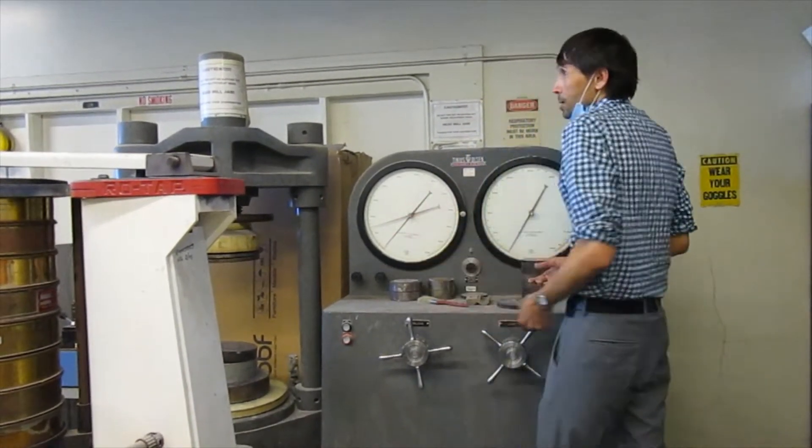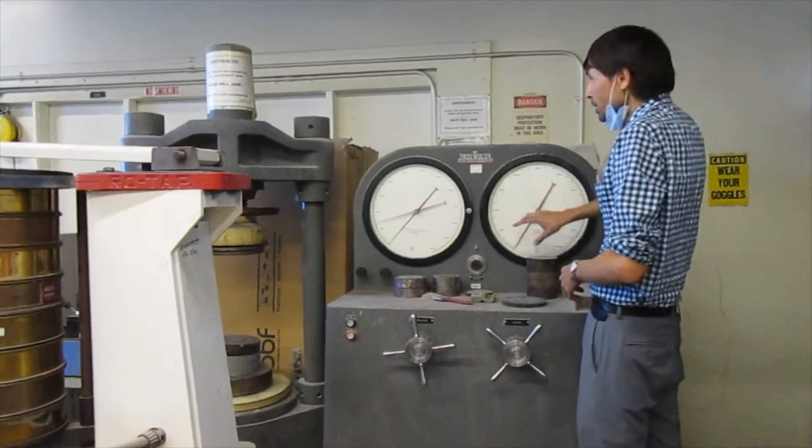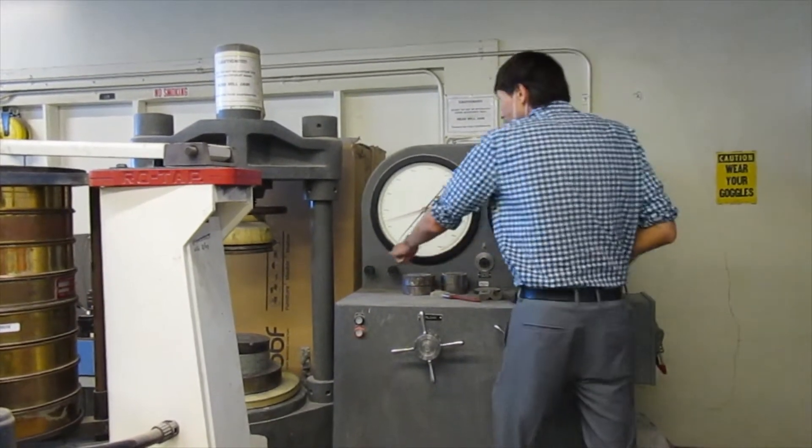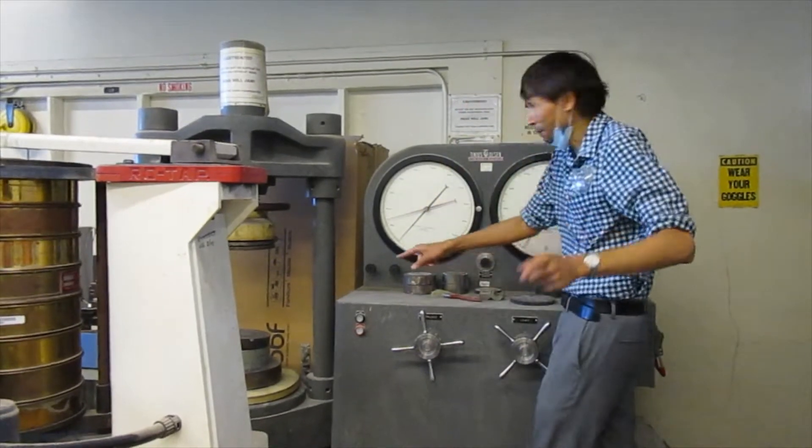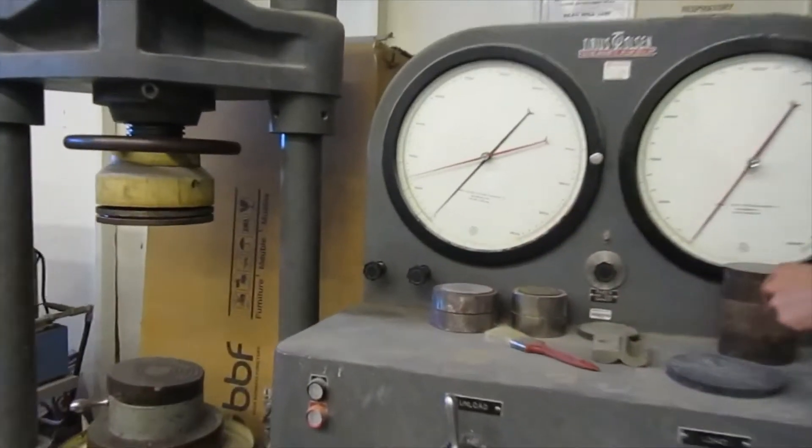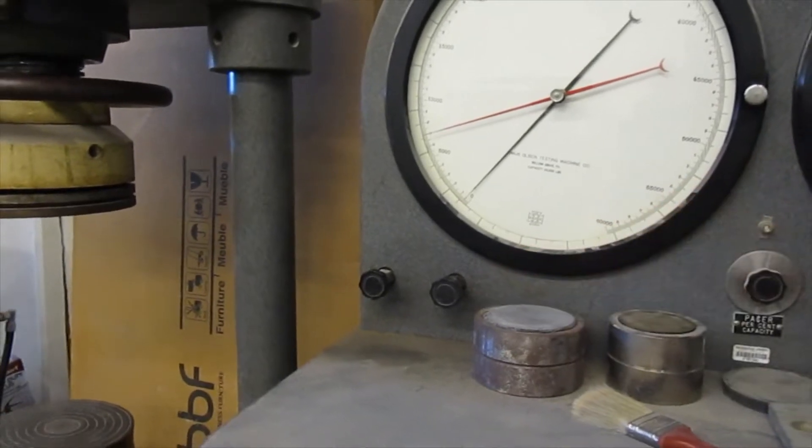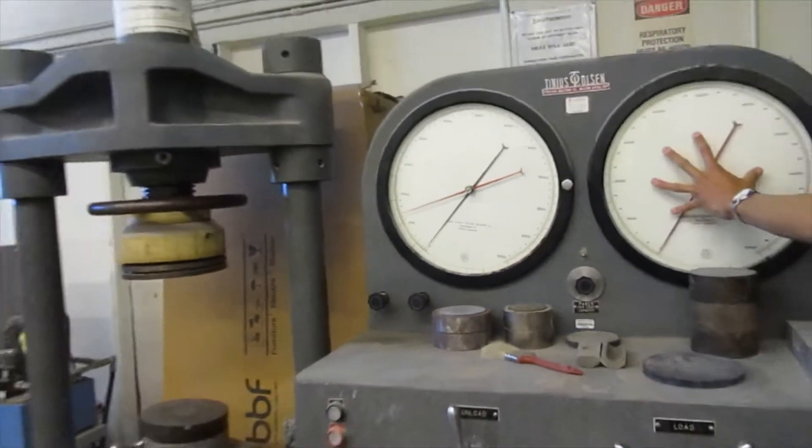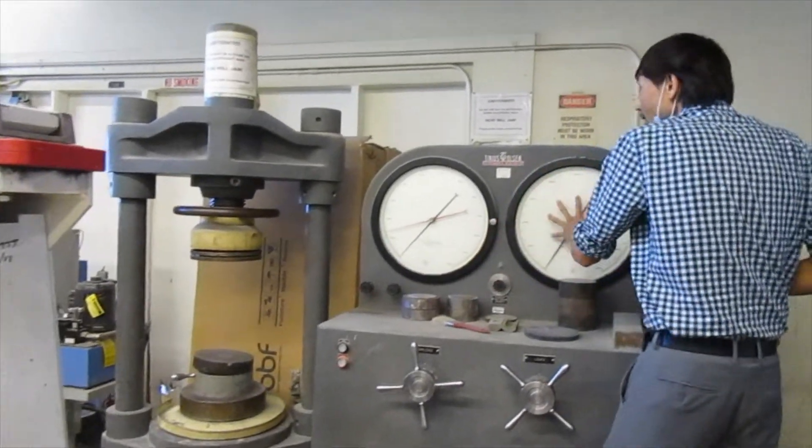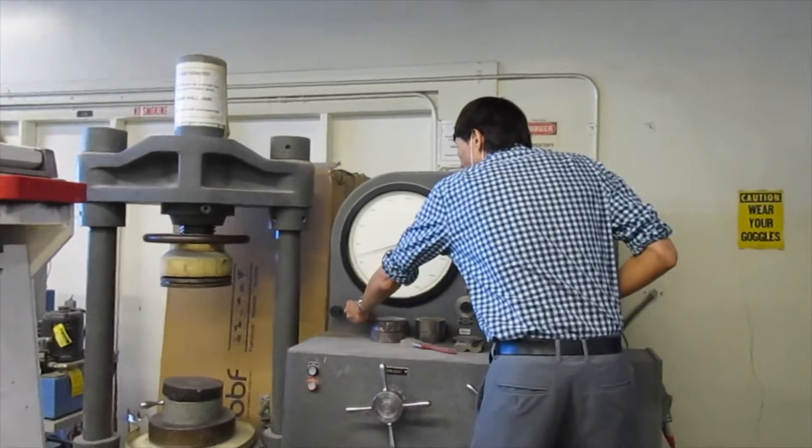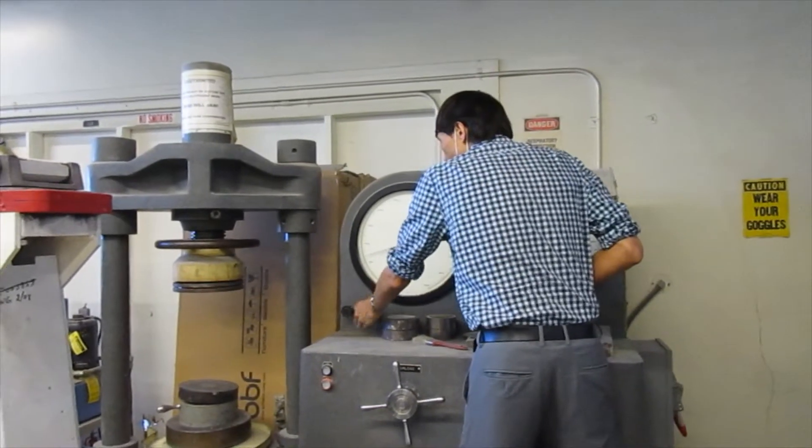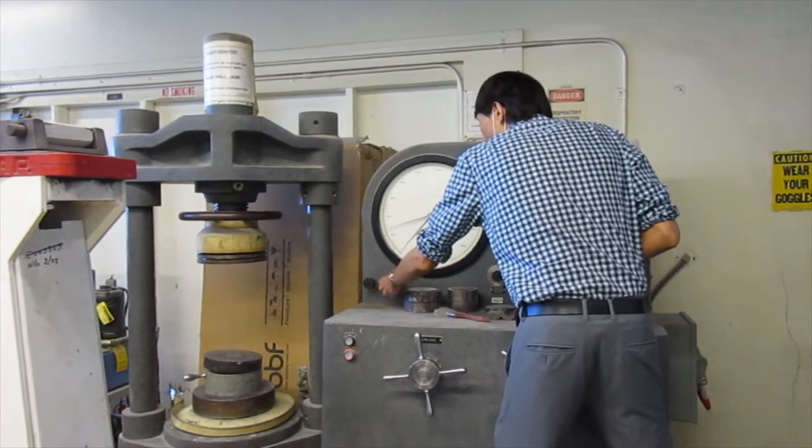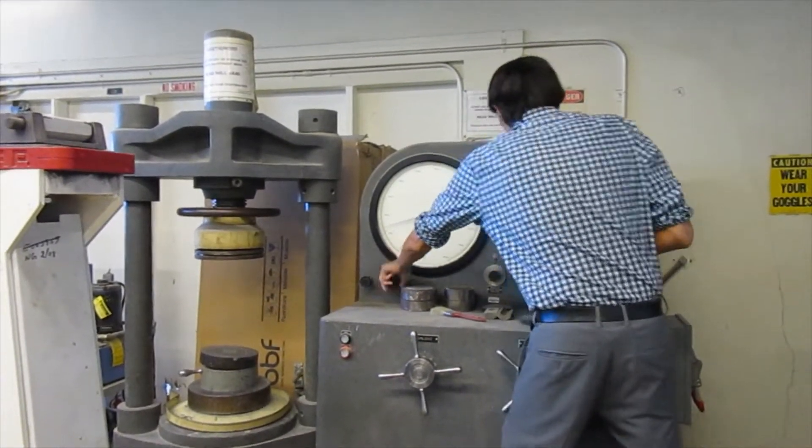If I think it'll take more than 60 kips, I use this gauge. So once I start the test, how do I know which one is working? You see these valves here? Right now the valve that controls the high range gauge is open, so I'm going to close that because I think today's specimen will take less than 60. So I'm going to close the valve that controls the high range gauge and I'm going to open the valve that controls the low range gauge.